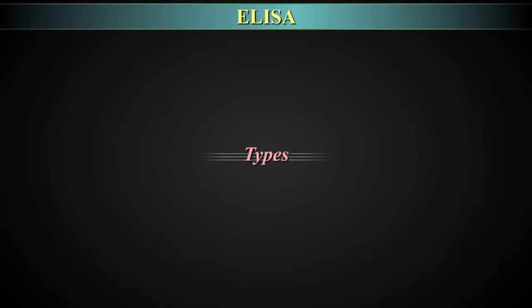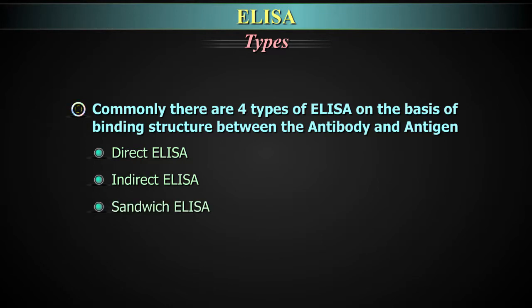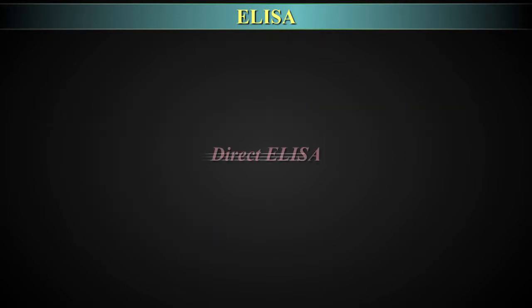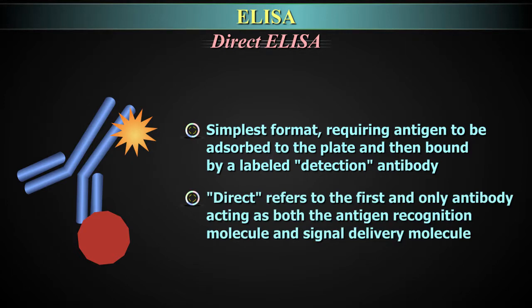Types of ELISA. Commonly, there are four types of ELISA on the basis of binding structure between the antibody and the antigen: Direct ELISA, Indirect ELISA, Sandwich ELISA, and Competitive ELISA. Direct ELISA has the simplest format, requiring antigen to be adsorbed to the plate and then bound by a labelled detection antibody. Direct refers to the first and only antibody acting as both the antigen recognition molecule and signal delivery molecule.